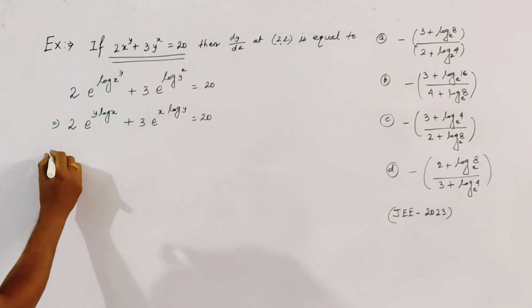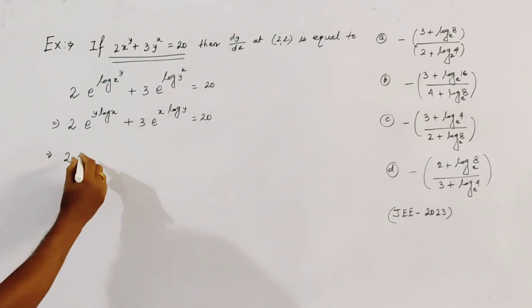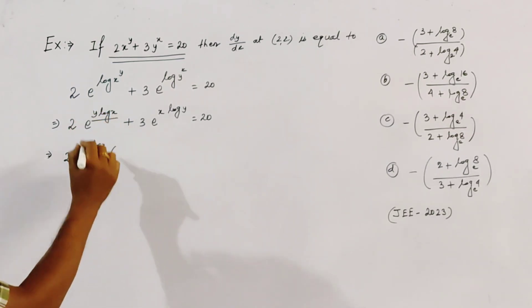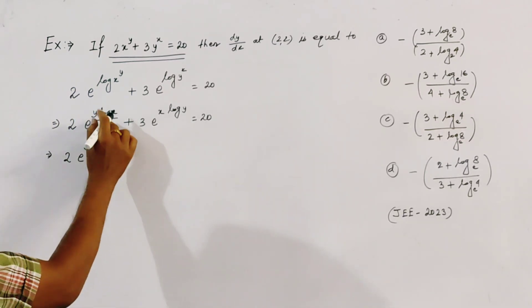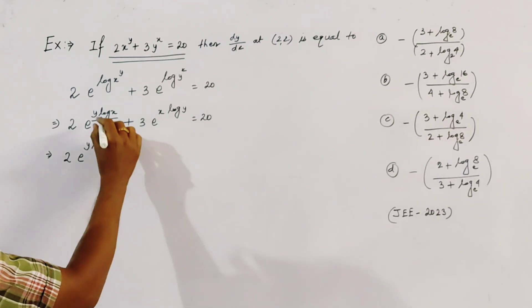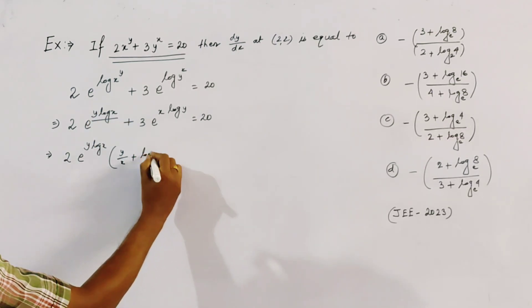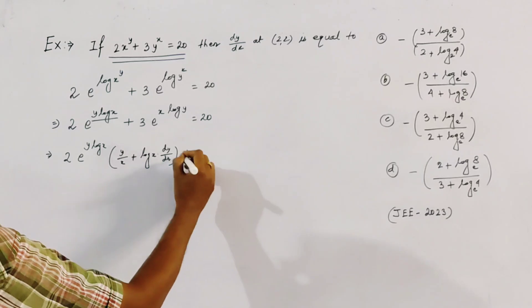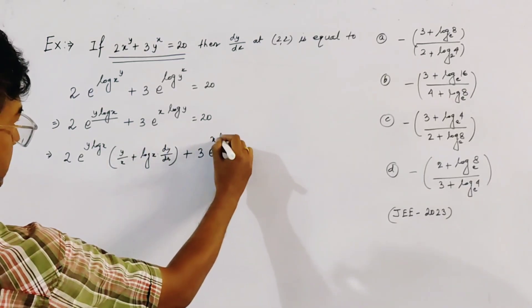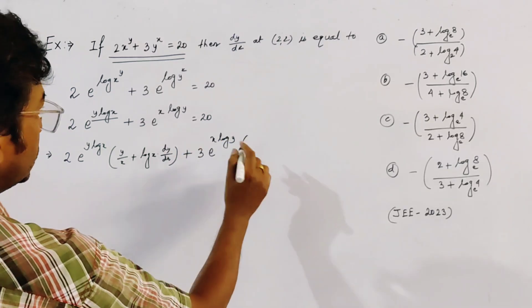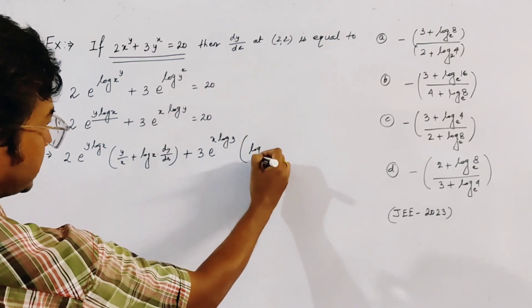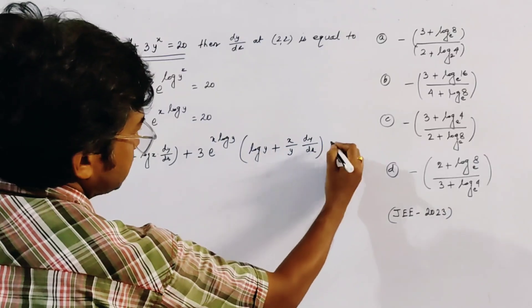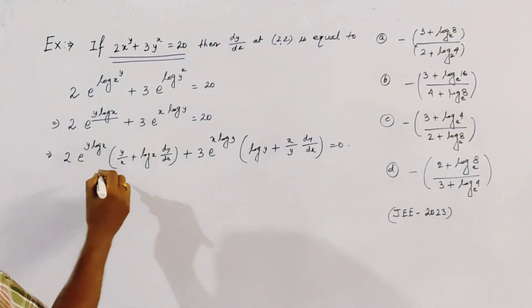Now differentiating with respect to x: the derivative of the first term is 2·e^(y·log x) · (y/x + log x · dy/dx). The derivative of the second term is 3·e^(x·log y) · (log y + x/y · dy/dx). Setting the total derivative equal to 0.